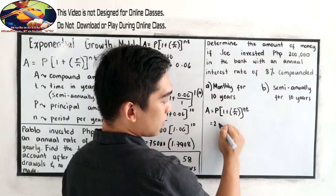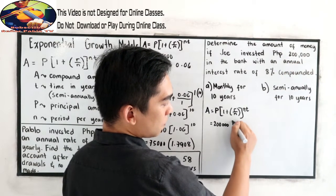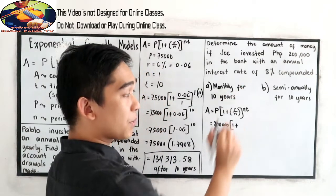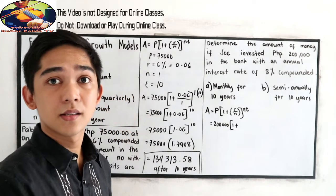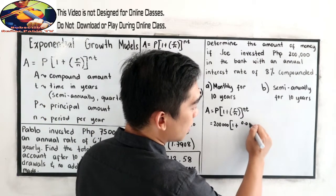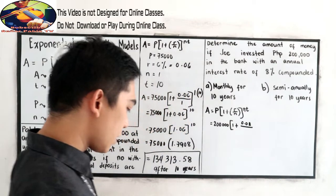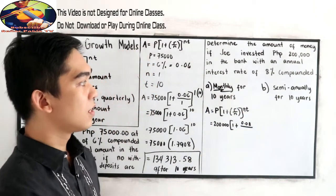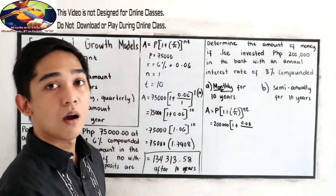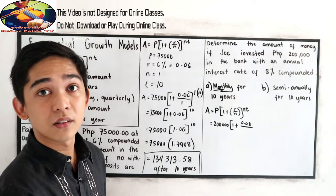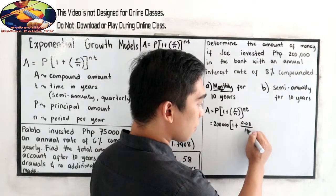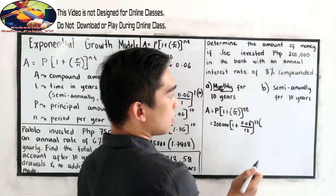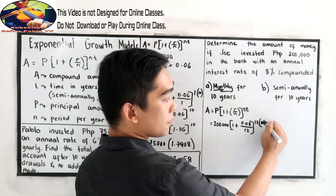So, let us find our principal amount. That is 200,000. Substitute. Then, 1 plus our rate is 8%. In decimal, that is 0.08. Over our N, so we have monthly. How many months are there in a year? Our N will become 12. So, we have N is 12 times our time is 10 years.